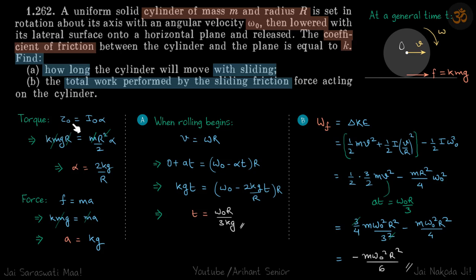About O, torque will be I alpha. The frictional force is kmg, so kmgr equals mr squared by 2 alpha, which gives alpha equals 2kg by r. For force, kmg equals ma, that gives a equals kg.